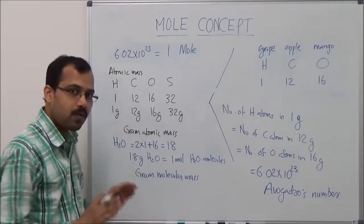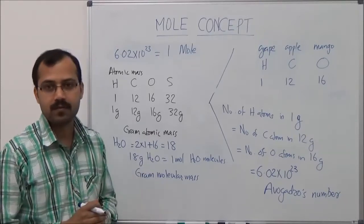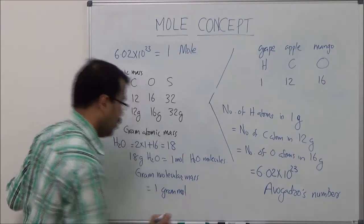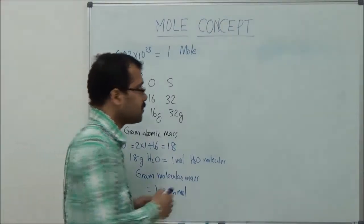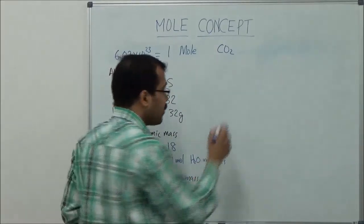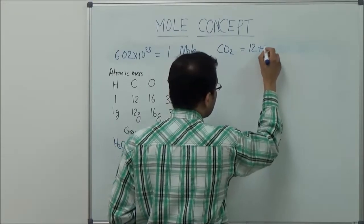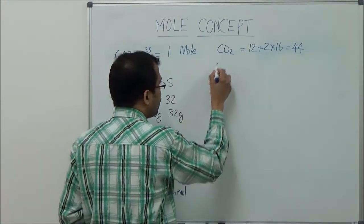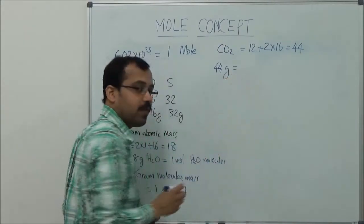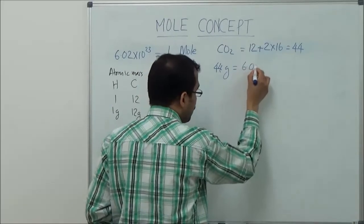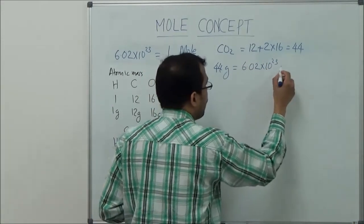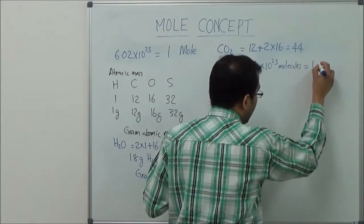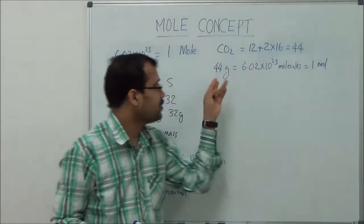The gram molecular mass of water is 18 grams, and it contains 1 mole of water molecules. The gram molecular mass of any compound contains 1 mole of the molecules of that compound, and it is also called 1 gram mole. Now let's consider more examples. For carbon dioxide, the molecular mass is 12 + (2 × 16) = 44. So the gram molecular mass of carbon dioxide is 44 grams, and 44 grams of carbon dioxide contains 6.02 × 10²³ molecules — so it is 1 mole.